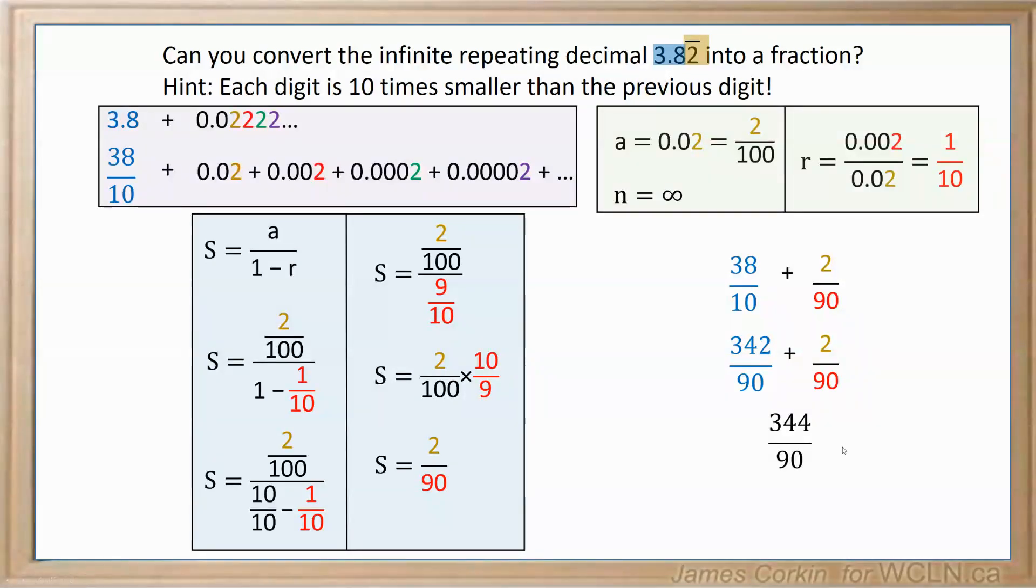You do want to simplify that if possible. So in this case, both of those do divide by 2. So there's your final answer, 172 over 45. Now, if you were to take a calculator and plug in 172 divided by 45, it will tell you that is 3.8, and then a bunch of twos.